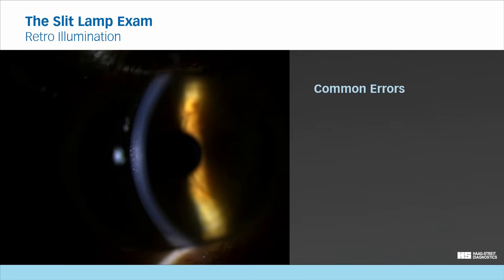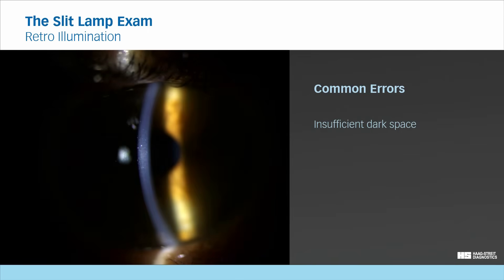When examining the cornea, make sure that you create sufficient distance between the direct slit beam and the area illuminated from behind by choosing a wide angle of illumination to microscope. Otherwise, when scanning the cornea, the direct illumination may obscure or wash out the views from the indirect retroillumination.